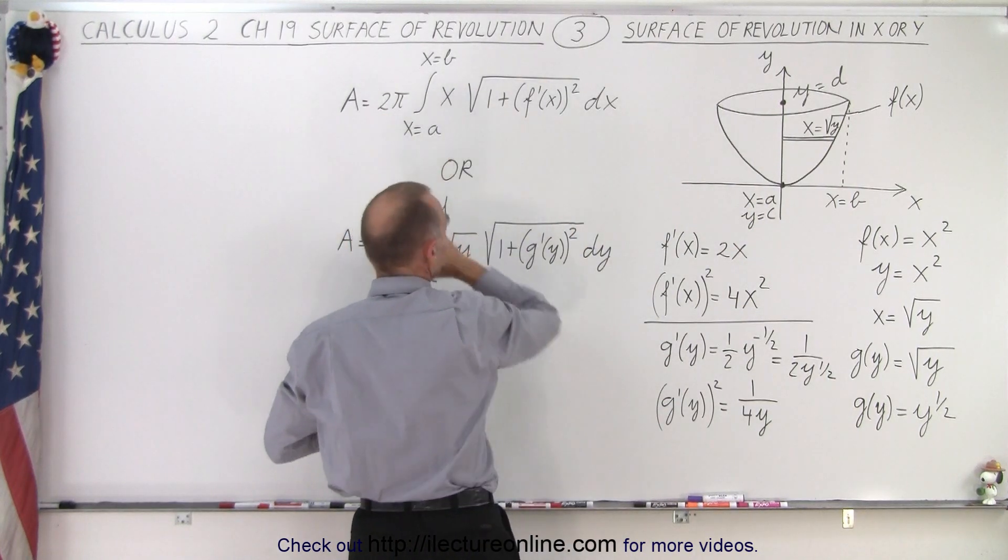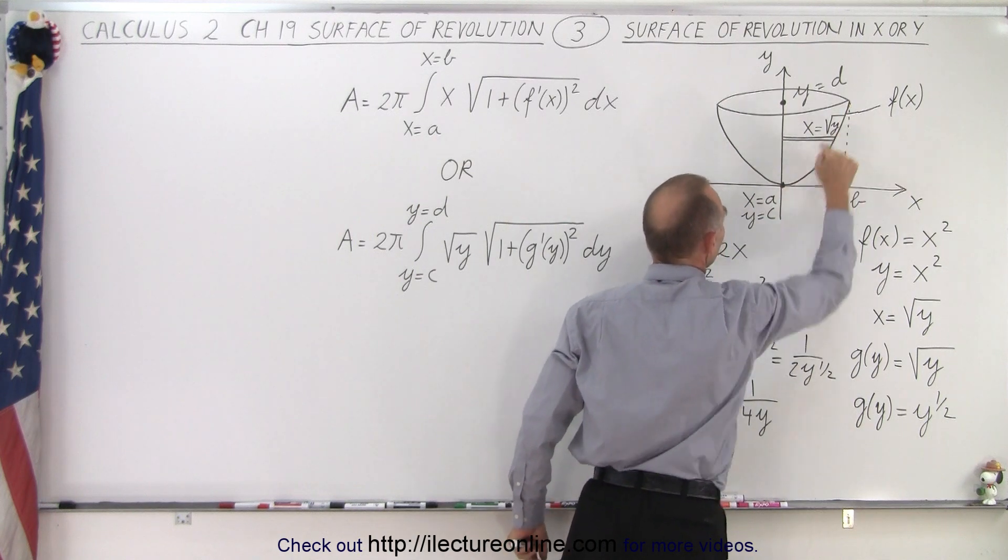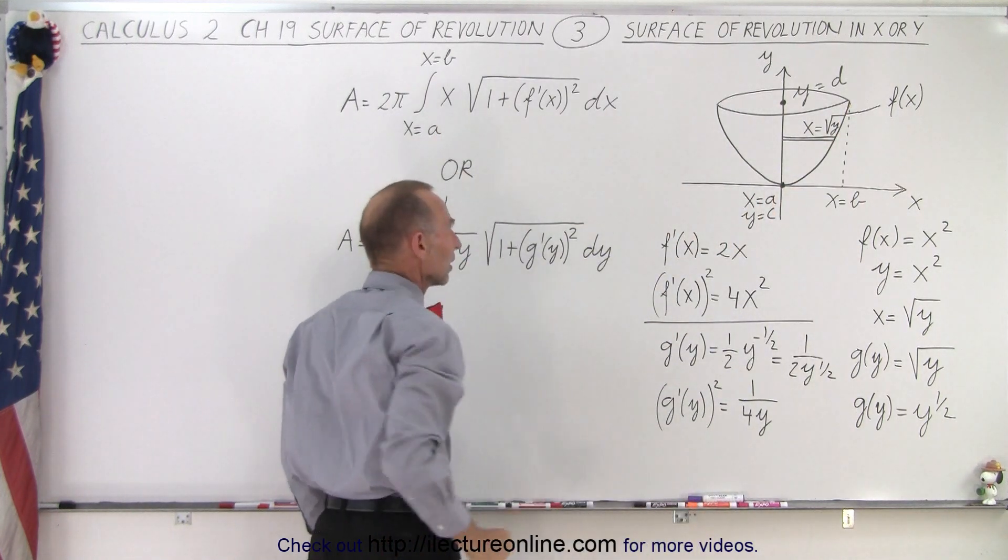We're going to integrate from x equals a to x equals b along that edge. So this is the arc length, and we have limits from x equals a to x equals b.